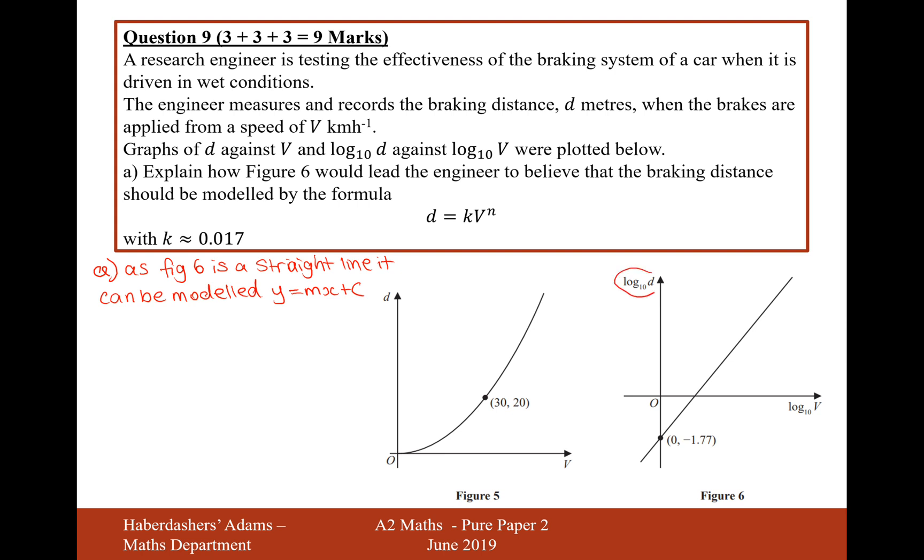But on the graph, it's not y and x. It's log base 10 of d and log base 10 of v that is y and x. So I can actually write this as log base 10 of d equals m times log base 10 of v plus c. And actually in this graph here, the plus c is minus 1.77.